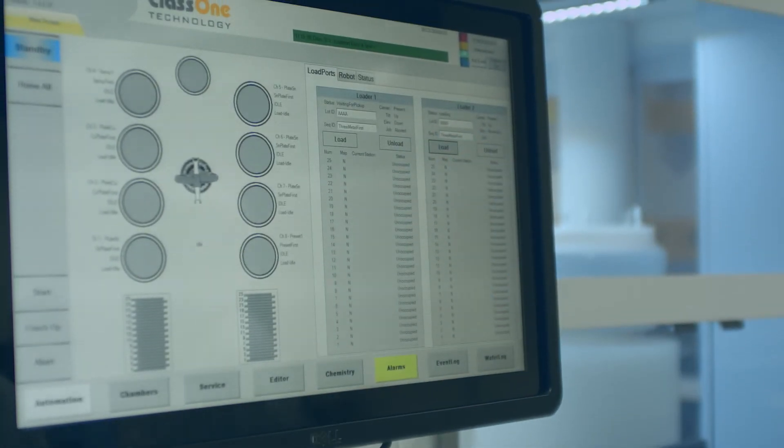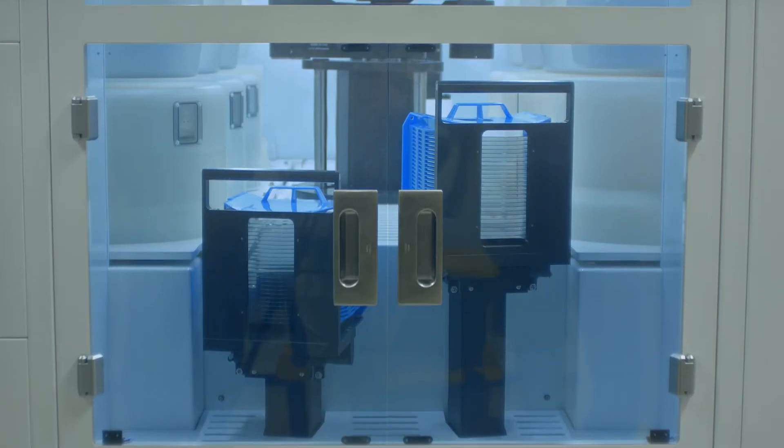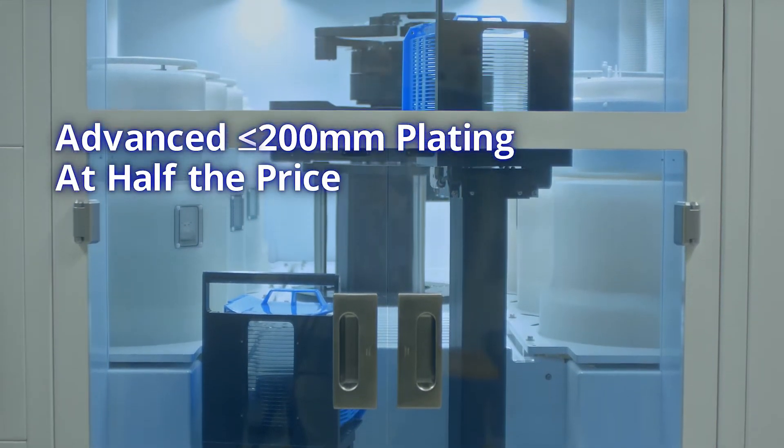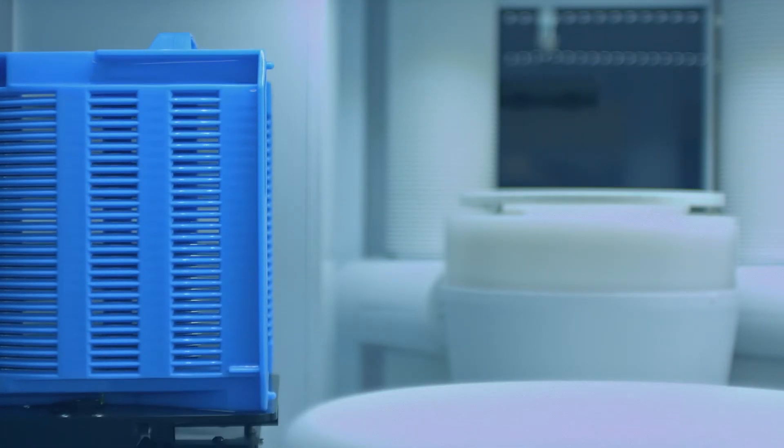We're focused on 300 millimeter and above. We've designed Solstice for 200 millimeter and below applications. So what we're talking about is fully automated cassette to cassette advanced plating with up to 75 wafers per hour.